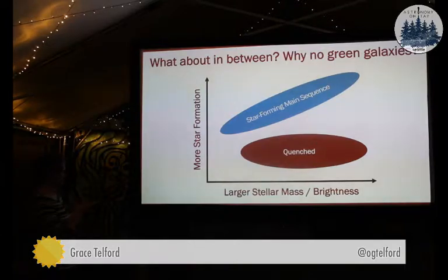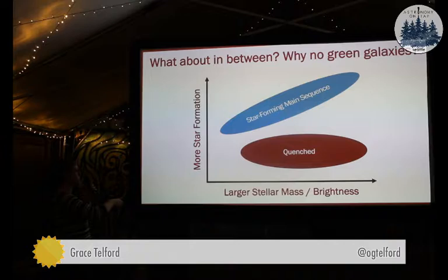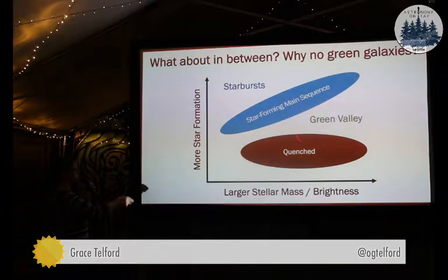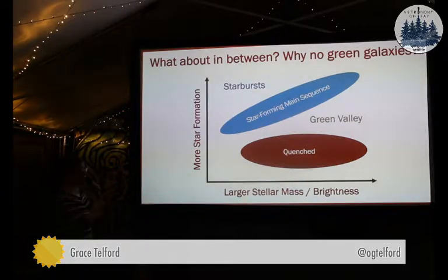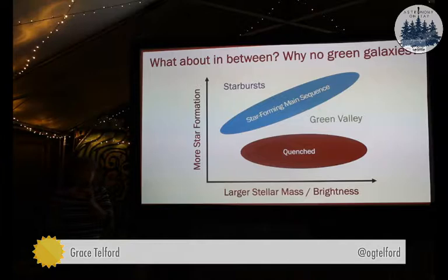In between the red and the blue — where are the green galaxies? Another way to think about this color dichotomy is in terms of the amount of star formation that's going on. Most galaxies in the universe live in one of two clumps: we have the quenched red galaxies not forming a lot of stars, and then we have this sequence of bluer galaxies that are still forming their stars. But there are some galaxies populating other parts of this diagram. We do, in fact, have some green galaxies, although they don't actually look green — we just say green because it's in between red and blue. And then we also have starburst galaxies up here. These are transient populations because they don't really stick around in these parts of the diagram for too long.